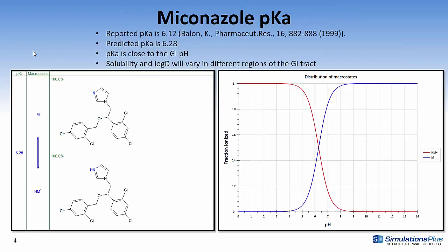This next slide shows the pKa of miconazole. It was experimentally measured and reported in a 1999 publication in Pharmaceutical Research where they observed a value of 6.12 for the pKa of miconazole. The ADMET Predictor prediction is 6.28 so a pretty nice prediction for that pKa. Both these pKa's are close to the GI pH therefore the solubility and log D will vary in different regions of the GI tract.